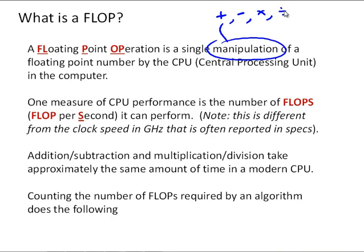One measure of the CPU performance is the number of flops, floating point operations per second, it can perform. Note, this is different from the clock speed in GHz that's often reported in computer specs for PCs, but it is true that a fast processor, so something with a large flop count, or something with a large fast clock speed, is going to have a high flops capability.